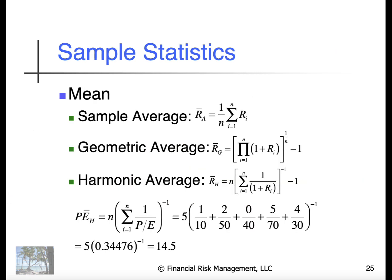Some sample statistics: the sample average, geometric average. The harmonic average is very useful in things like the P-E ratio, where E could be zero. If E is in the denominator and it's zero, you have a problem. So the harmonic average is a good way to deal with things like P-E ratios.